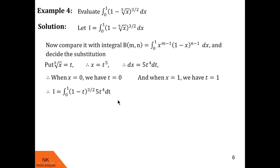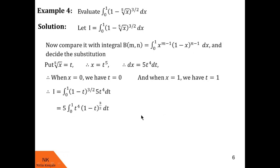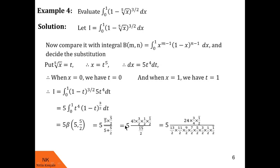We transform integral i to get the integral from 0 to 1 of 1 minus t raised to 3 by 2 into 5t raised to 4 dt. Taking out the constant 5, we have 5 times the integral of t raised to 4 into 1 minus t raised to 3 by 2, dt over 0 to 1. Comparing with the beta definition, m minus 1 is 4 and n minus 1 is 3 by 2, so m equals 5 and n equals 5 by 2. Thus, i equals 5 times beta of 5 comma 5 by 2, which can be further simplified using beta and gamma function properties.